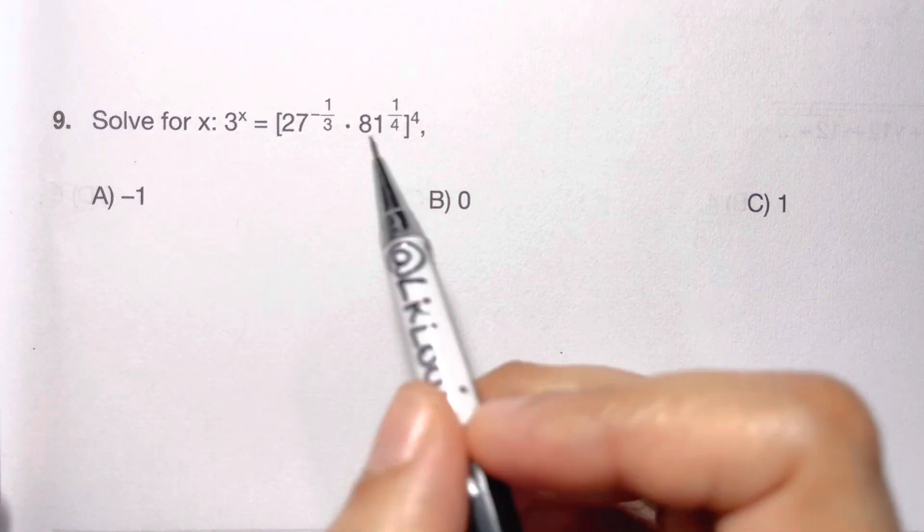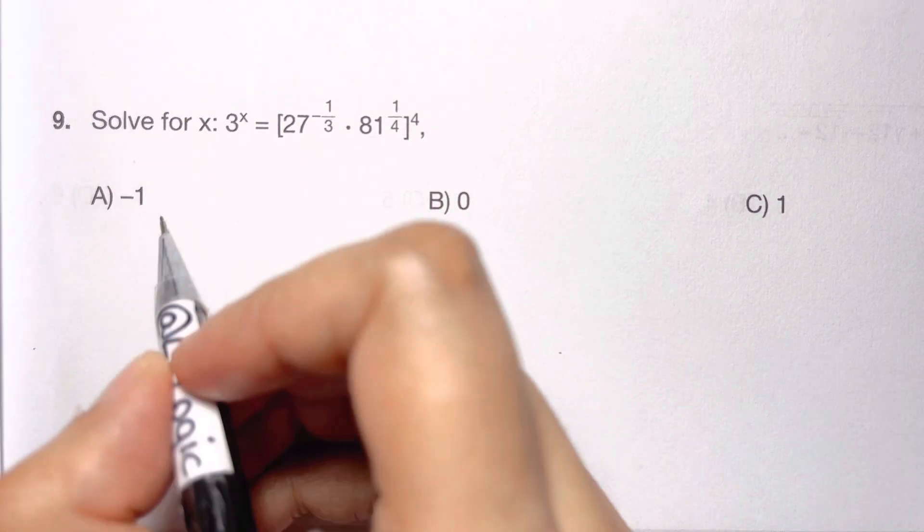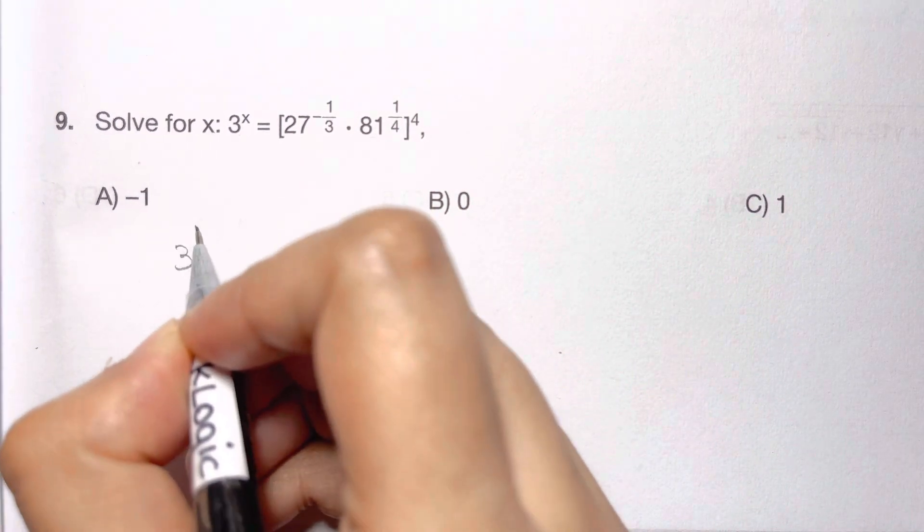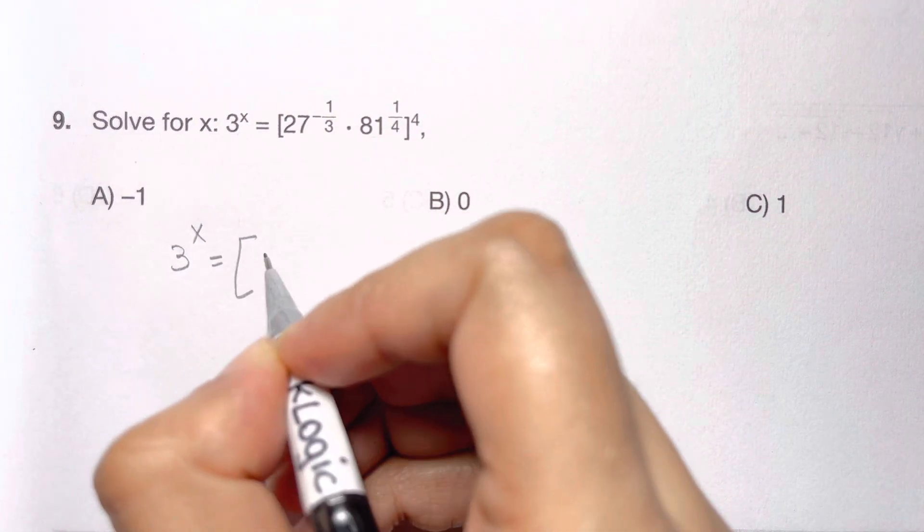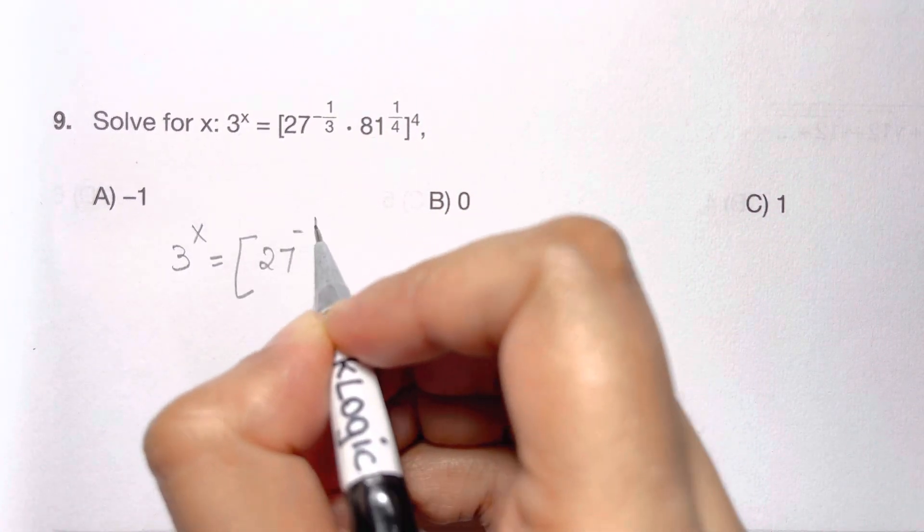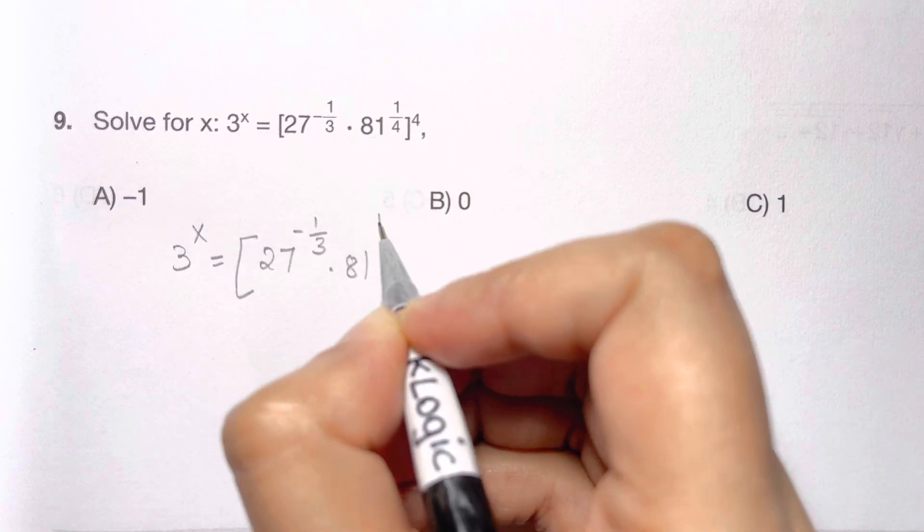Let's try to solve this. What are we going to do? I'm going to write that 3 to the power of x equals 27 to the power of negative one-third times 81 to the power of one-fourth over fourth.